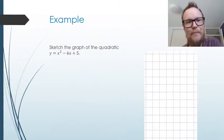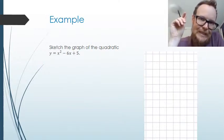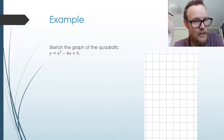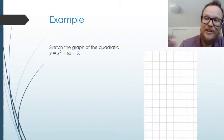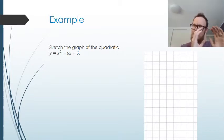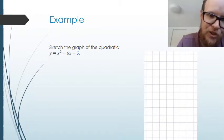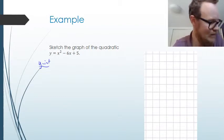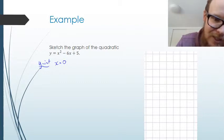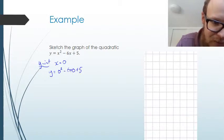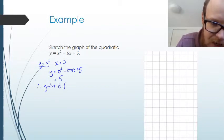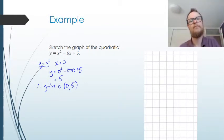Let's do an example: Y equals X squared minus 6X plus 5. Organize your answer with little headings for each step. Start with the Y-intercept. When X equals 0, Y equals 0 squared minus 6 times 0 plus 5, so Y equals 5. Therefore the Y-intercept is 0, 5.